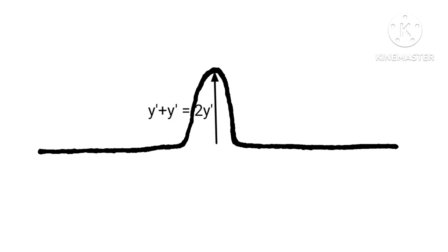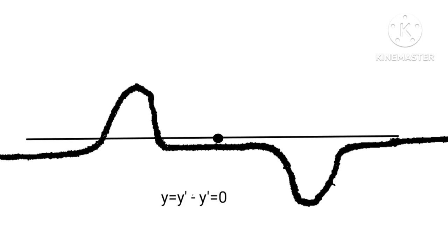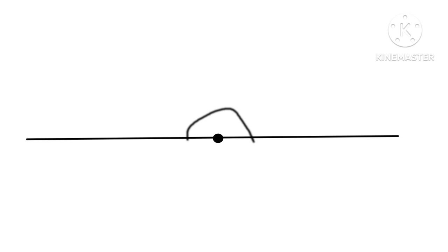The resultant displacement is the algebraic sum of the displacement due to each wave pulse. But when two wave pulses have the same amplitude but are in opposite phase, they collapse and displacement becomes zero. This is known as the principle of superposition of waves.